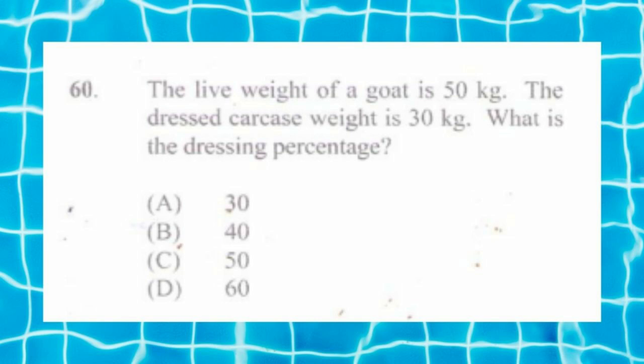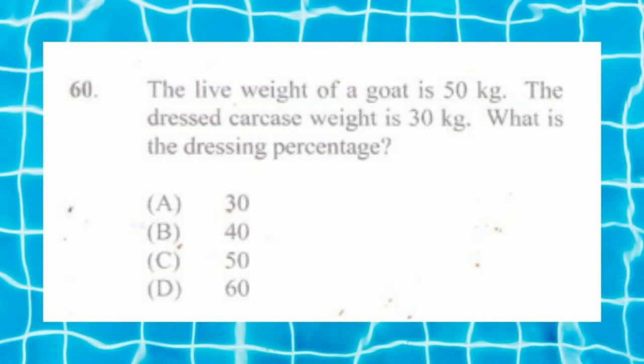Question number sixty: the live weight of a goat is 50 kg and the dressed carcass weight is 30 kg. What is the dressing percentage? The answer is d) 60. The formula is: dressed weight divided by live weight times 100, so 30 divided by 50 times 100 equals 60%.